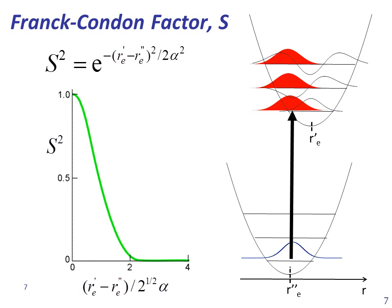The extent of the wave function overlap can be quantitatively determined by the Franck-Condon factor, expressed in the equation as shown here. The Franck-Condon factor depends exponentially on the difference between the equilibrium bond lengths. Its value is maximum when there is no difference between the equilibrium bond lengths, and decreases exponentially as the bond length in the electronic excited state is increased.